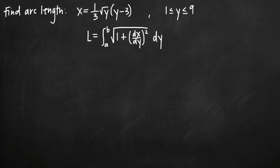Today we're going to be talking about how to find the arc length of a function. In this particular case we've been given the function x equals one-third times the square root of y times the quantity y minus 3, and we've been asked to find the arc length of this function on the interval 1 ≤ y ≤ 9.